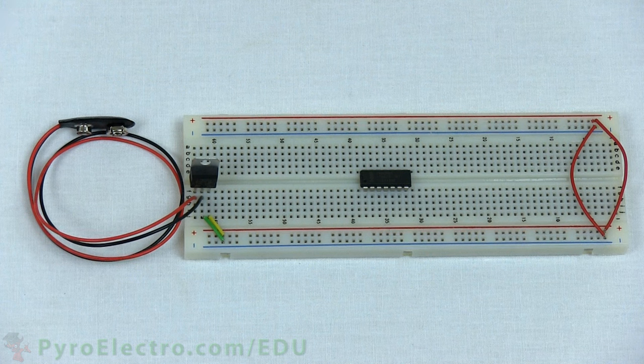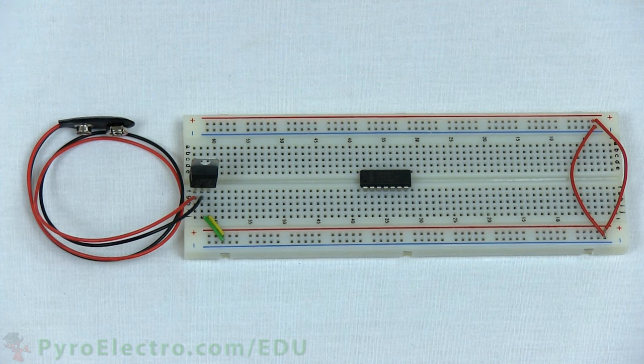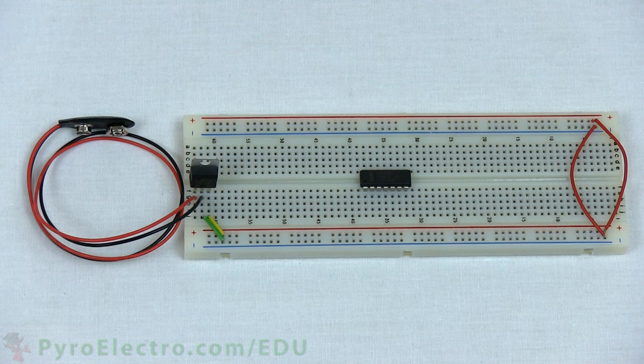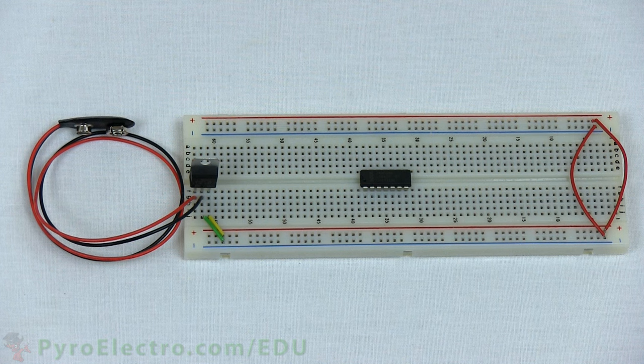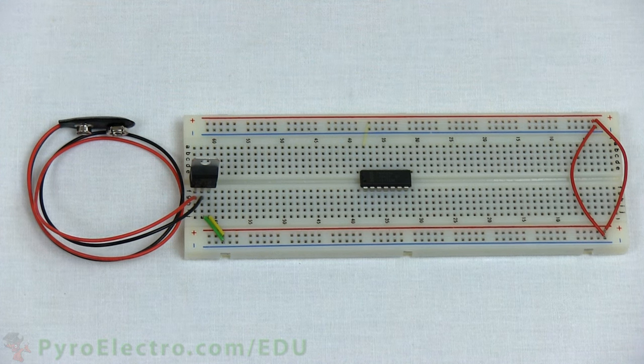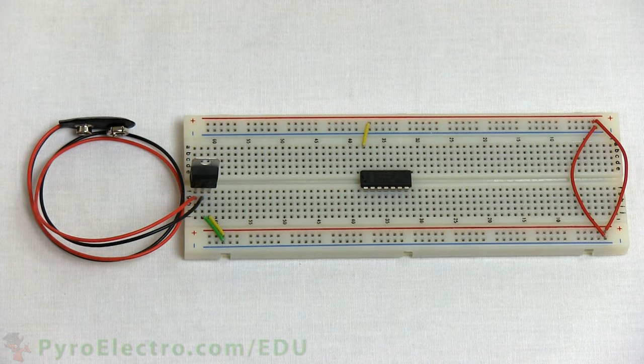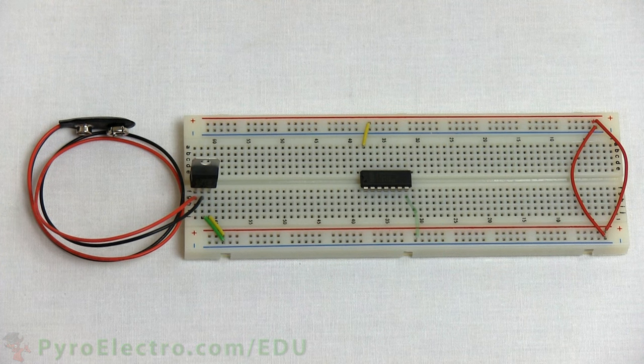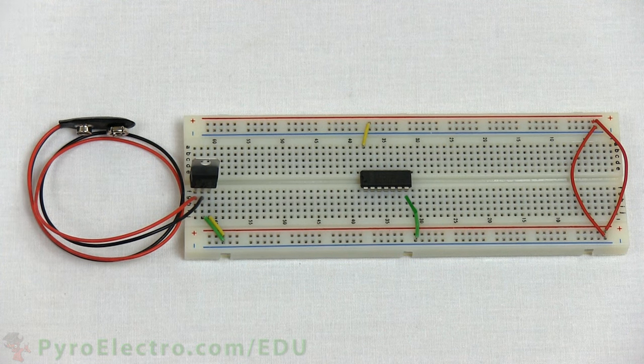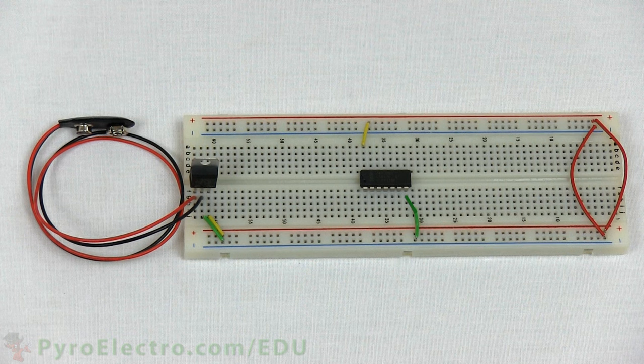The 74HC08 AND gate IC will be placed in the middle. Notice that it fits perfectly. Breadboards are designed to be used specifically with these type of PDIP integrated circuits. Connect plus 5 volt power to pin 14 and ground to pin 7. And now we're ready to test the AND gate.